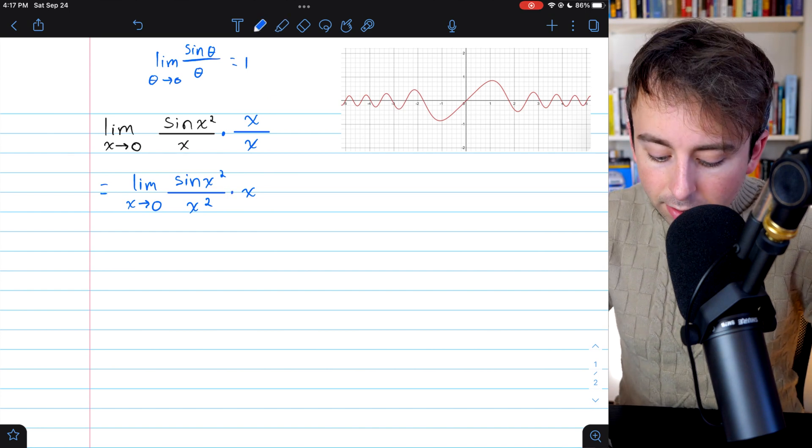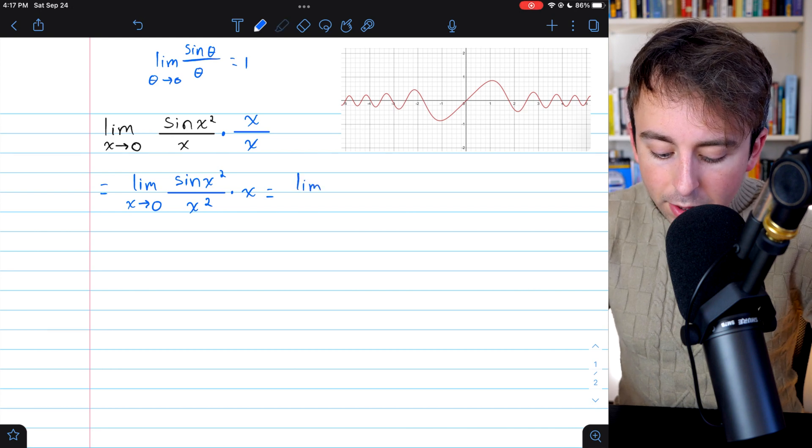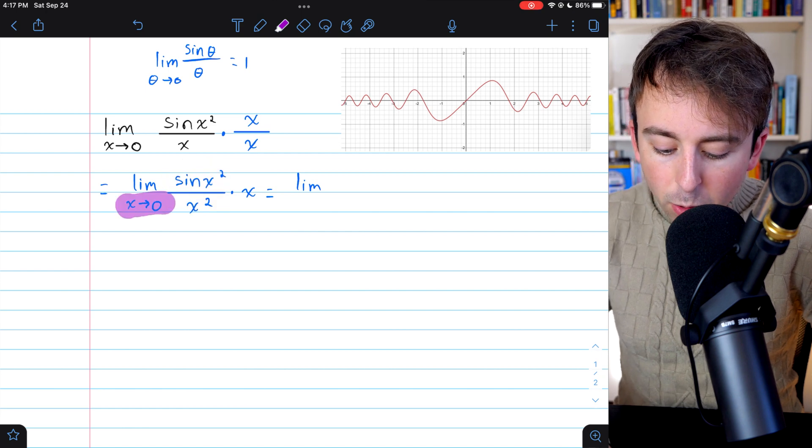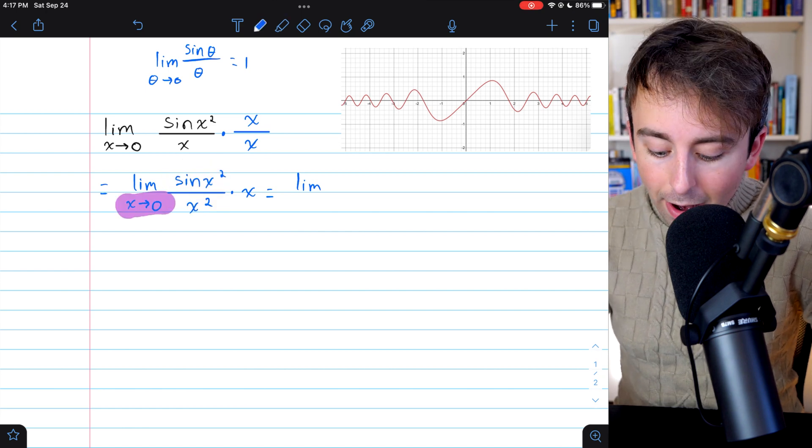Now, we can just split this up using the limit product rule. For the sine x squared over x squared, notice that when x approaches zero, x squared approaches zero.